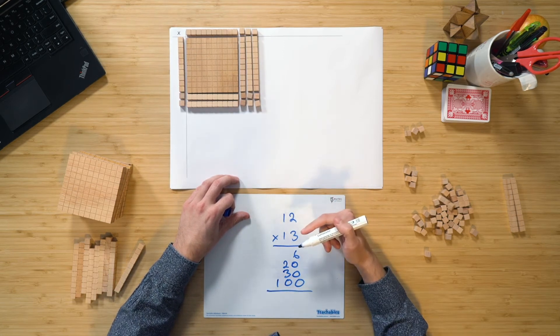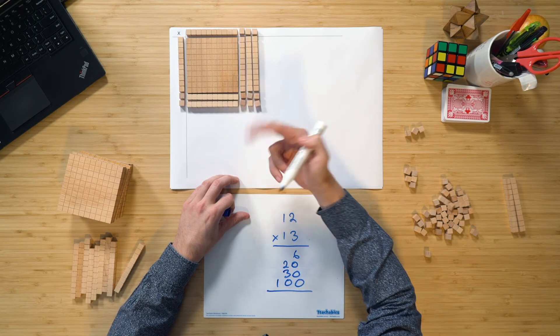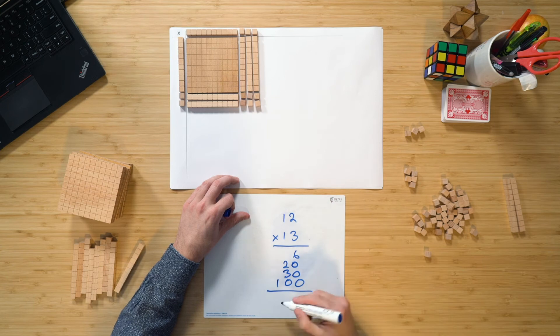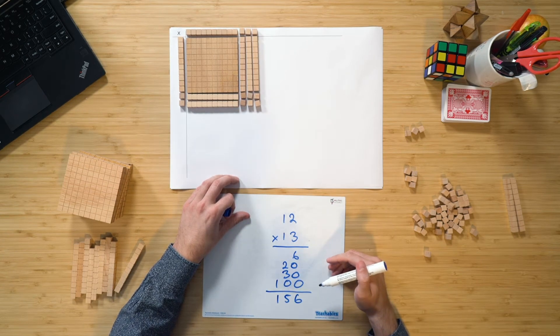And when we add this all together, you can see that I have 100, 1, 2, 3, 4, 5, and 56. So, 100 and 56. And of course, that all adds up going down that way as well.